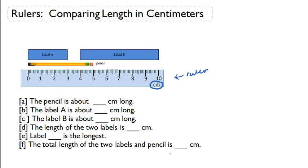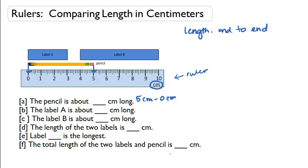They give us two labels and a pencil. The first question says the pencil is about blank centimeters long. Remember, when we do length we always measure the distance from end to end. The pencil's one end is at 0 centimeters and the other end is at 5 centimeters. So 5 minus 0 gives us 5 centimeters. The pencil is 5 centimeters long.